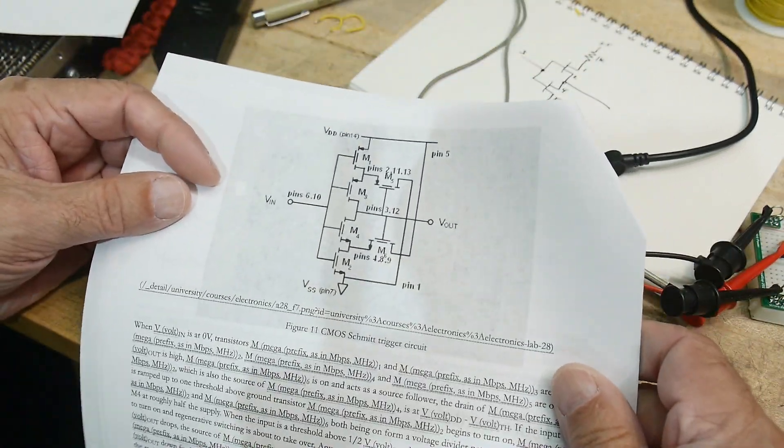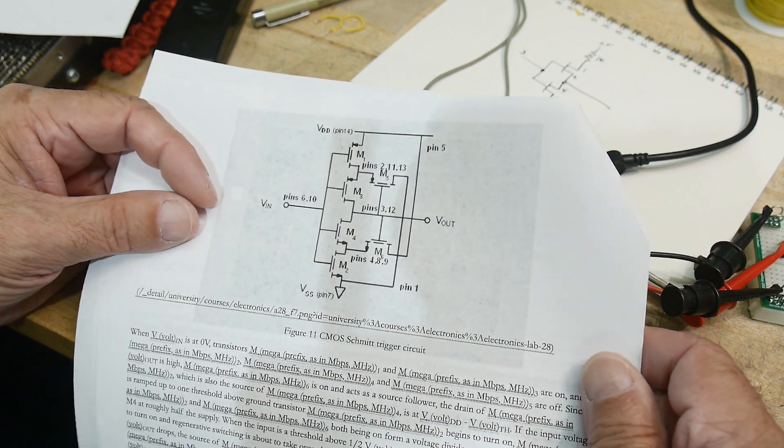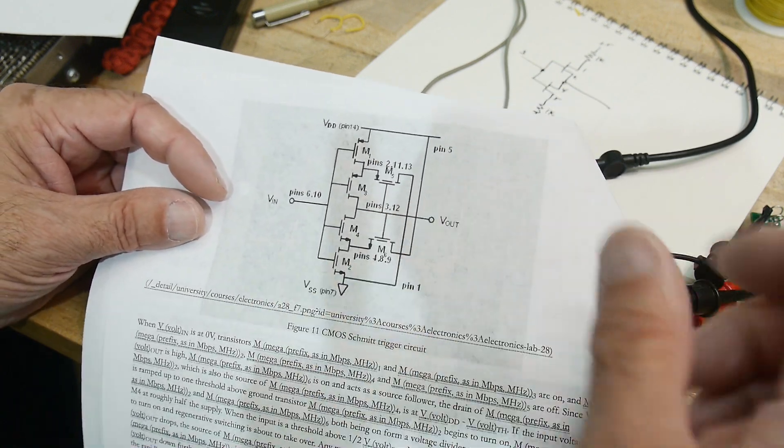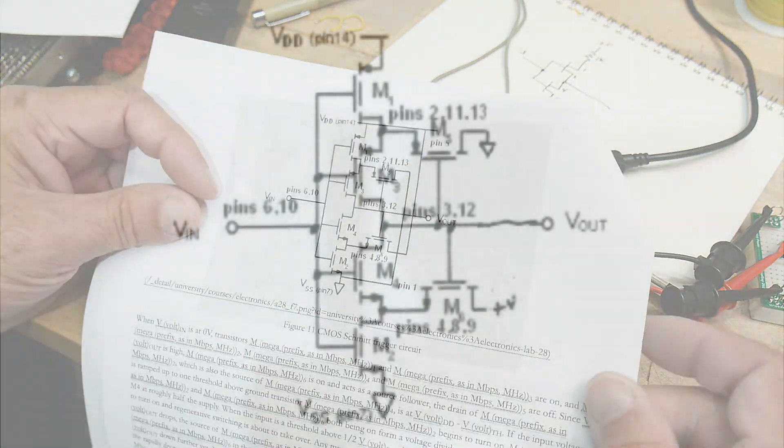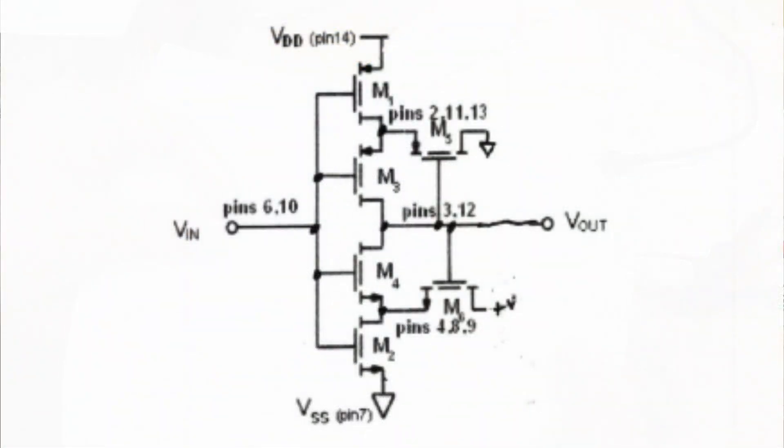So this is their diagram of a Schmitt trigger. I'm going to redraw it because it's confusing the way they have it drawn here. But if you draw it the other way, you can see that it's just a string where it's just an inverter. It's basically just an inverter, right? So it just has some extra transistors in it.